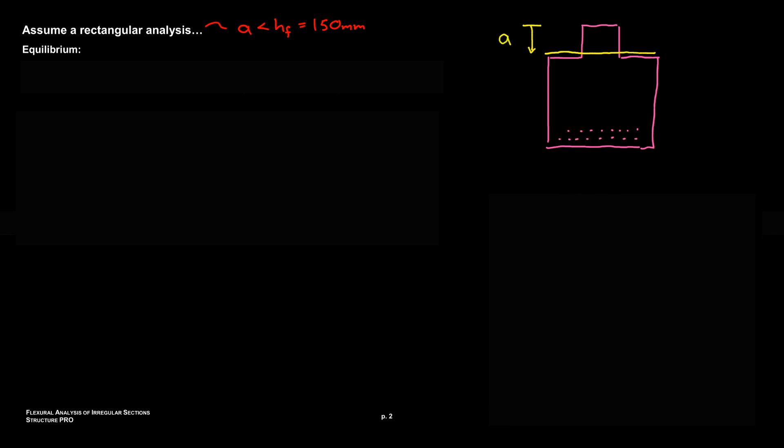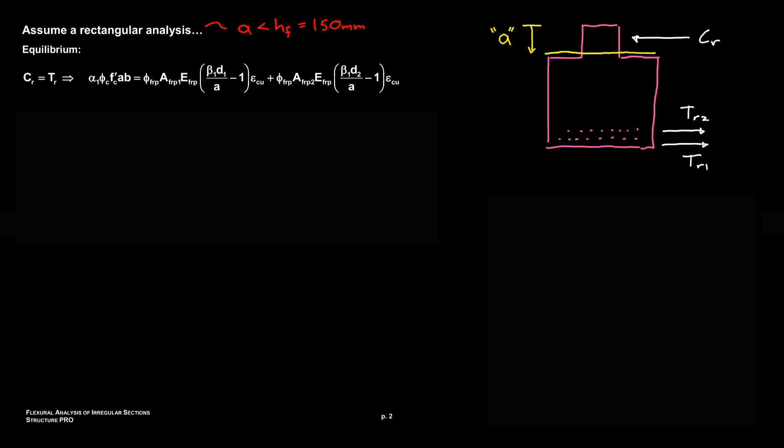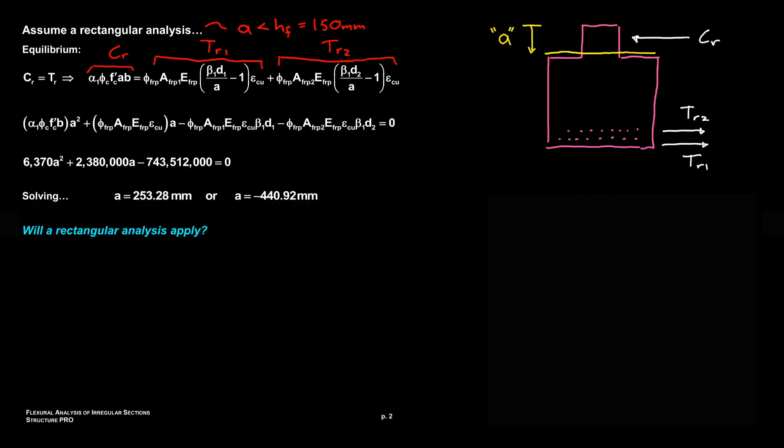We can draw a little sketch and we can draw our resultant forces that will occur. So we got CR from our concrete, TR1 and TR2. So now let's make an equilibrium equation with these three forces, and our goal here is to solve for A. It's the only unknown, and we end up with this gross nasty quadratic equation. And with solving it out we get two options, throw out the one and we're left with an A of 253.3 millimeters.